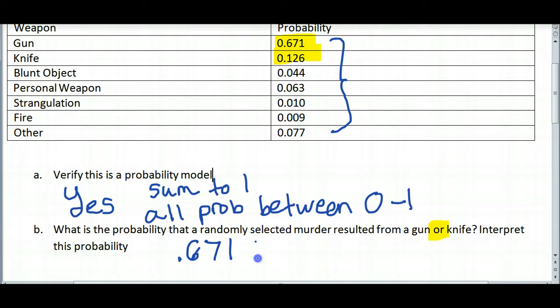0.671 probability of a gun plus a 0.126 probability of a knife. And again, adding decimals is something I would probably do with a calculator. Comes out to a 0.797. What does this mean? Well, it means 79.7% or almost 80% of murders are conducted with either a gun or a knife. Pretty common instruments of destruction there, I guess.